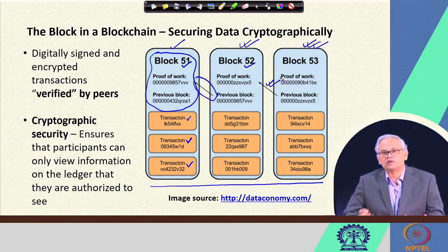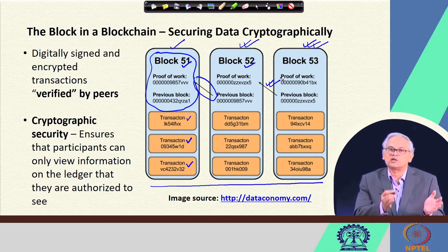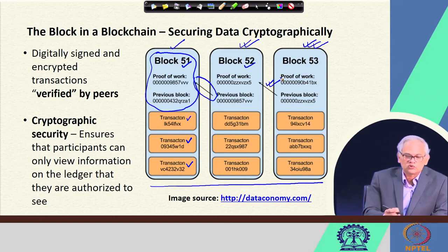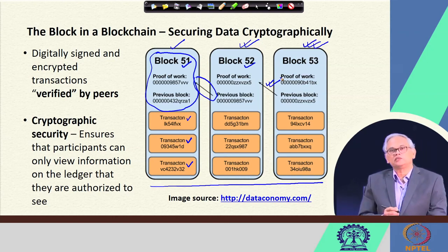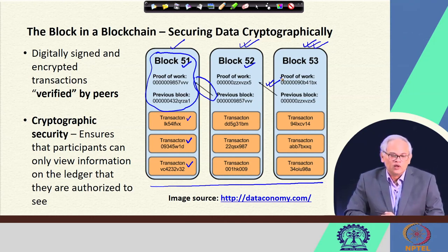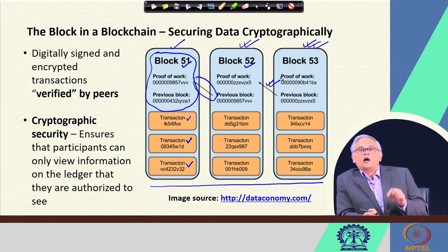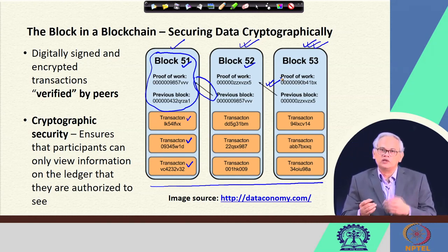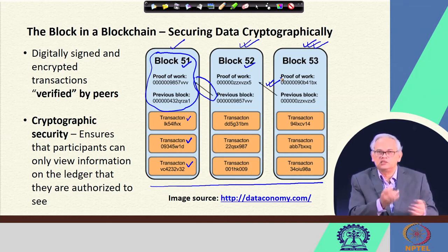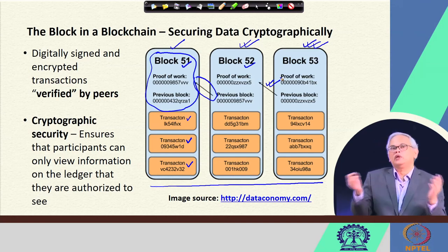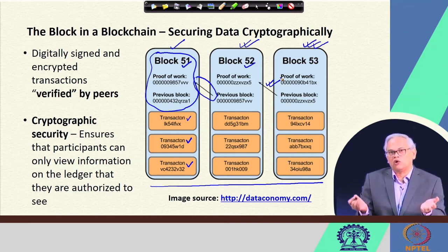The entire security is provided by cryptographic techniques — the ones we have already studied. These ensure that participants can only view the information on the ledger if they are authorized to. Certain blockchains allow only a selected group to see transactions, while in public blockchains like Bitcoin, everybody can see what is going on.